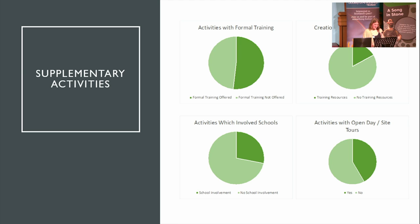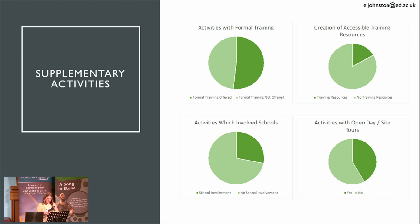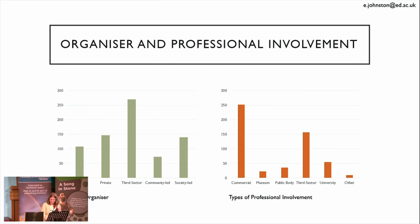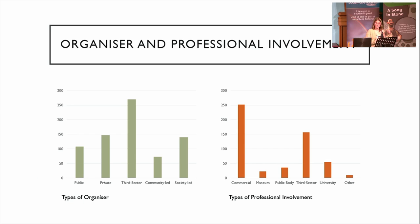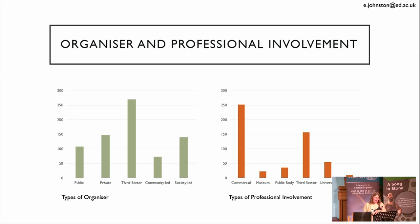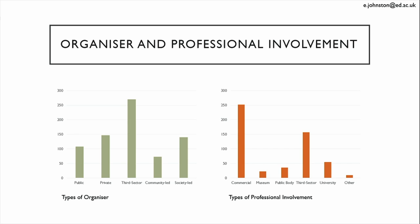While collecting this data, I've also looked at other activities or outputs that projects have had. I've created four categories: formal training, creation of accessible training resources, schools involvement, and site tours or open days. The pie charts on screen show the percentages of projects with and without these supplementary activities. This data has been further scrutinised to reveal a statistically significant relationship between projects that develop these extra outputs and those with professional involvement. I've grouped projects according to the organiser — categorised as public sector, private sector, third sector, community-led, and society-led.